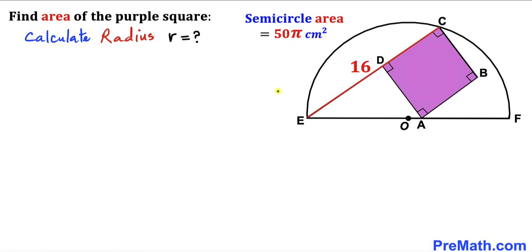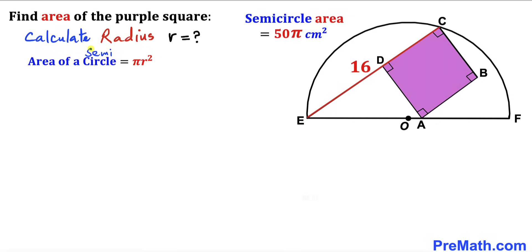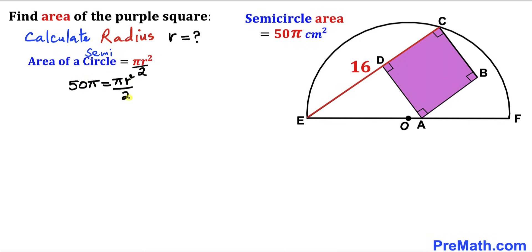Let's calculate the radius r of this semi-circle. Recall the area of a circle formula: area = πr², where r is the radius. Since we're dealing with a semi-circle, we divide by 2. We know the area is 50π, so we write: 50π = πr²/2.